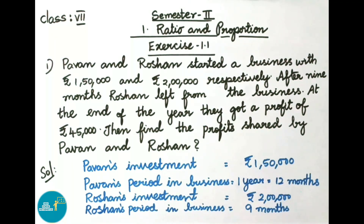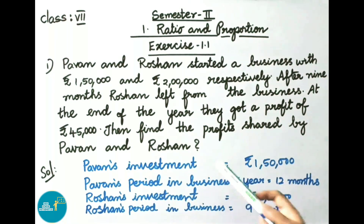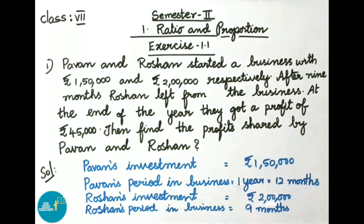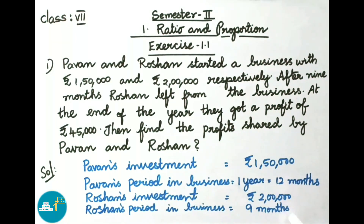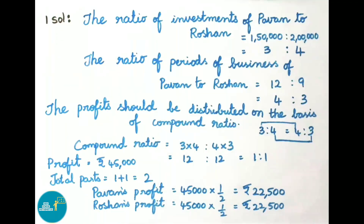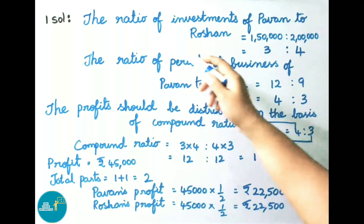Let us see the solution. Pawan's investment is 1 lakh 50,000 rupees and Pawan's period in business is one year, that equals to 12 months. Roshan's investment is 2 lakh rupees and Roshan's period in business is 9 months.